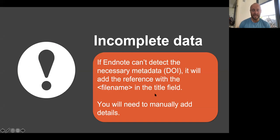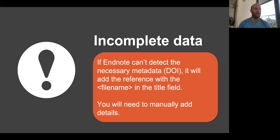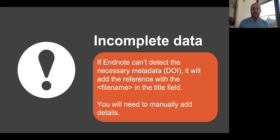If there's incomplete metadata in the PDF and EndNote can't detect the DOI, it'll add the reference to your library but with the file name in the title field, so you need to manually add the details. Situations where you might see this happen frequently include if you're importing legal cases, gray literature — such as reports by consultancies and think tanks like the Grattan Institute, Deloitte, or KPMG — or policy documents. You need to manually add the details for those, but it's not too laborious. It's a good way to get those items into your EndNote library so they're easy to cite.